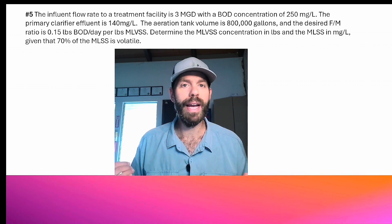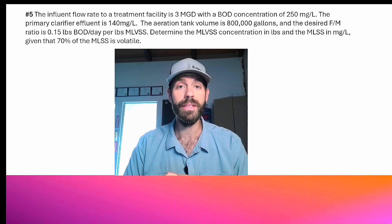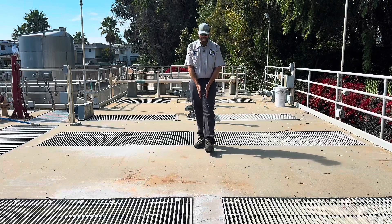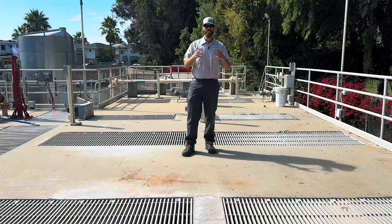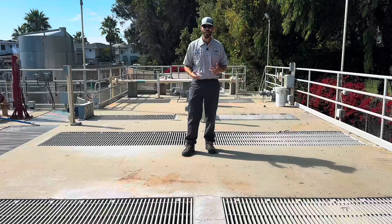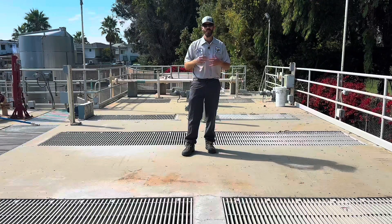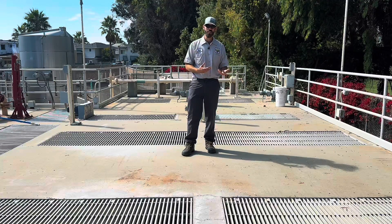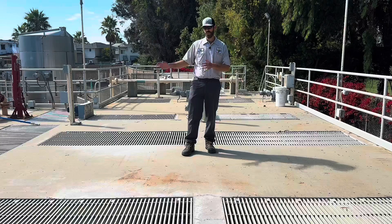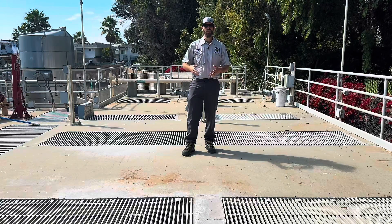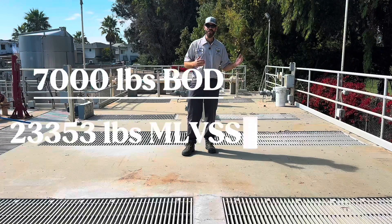Now we're going to go out to the plant for a visual representation of what you might do with a significant F:M swing. I'm standing on the dividing line between two basins — one to my left in service, one to my right that's empty. Let's take our 3,500 pounds of BOD and say it's a seasonal flow, like a state park or a touristy town that experiences significantly higher and more concentrated flows in the summer than in the off-season.